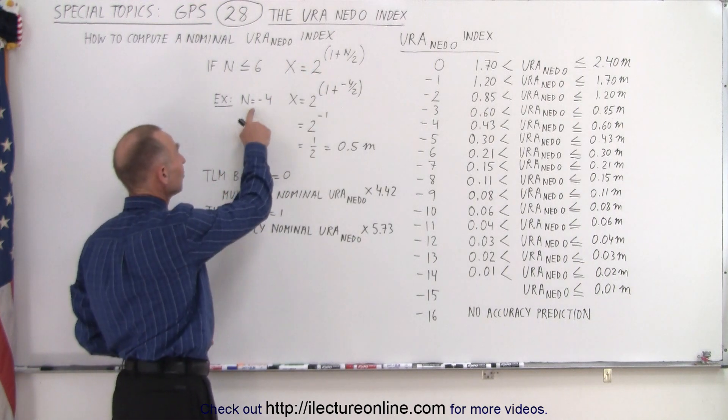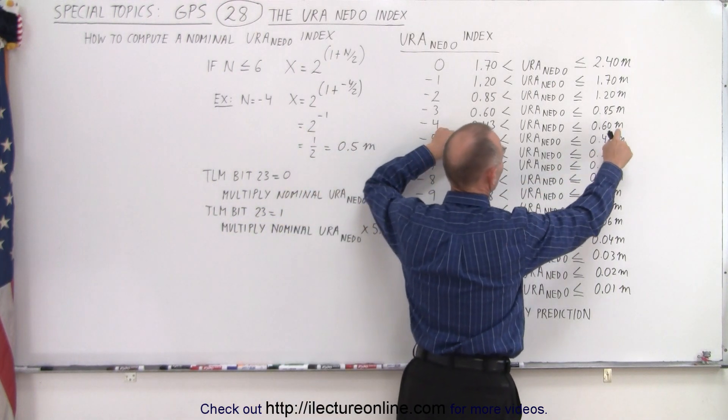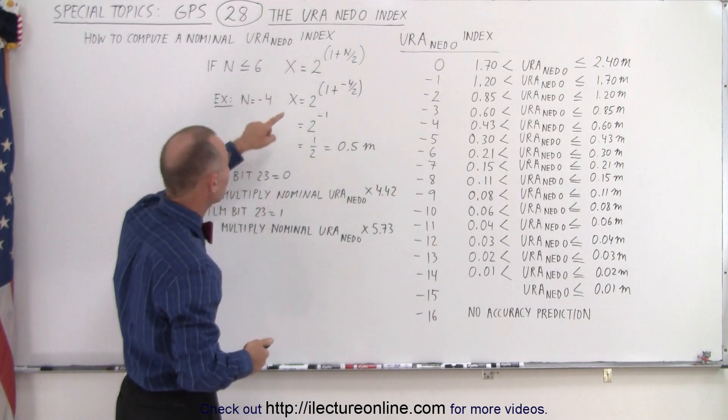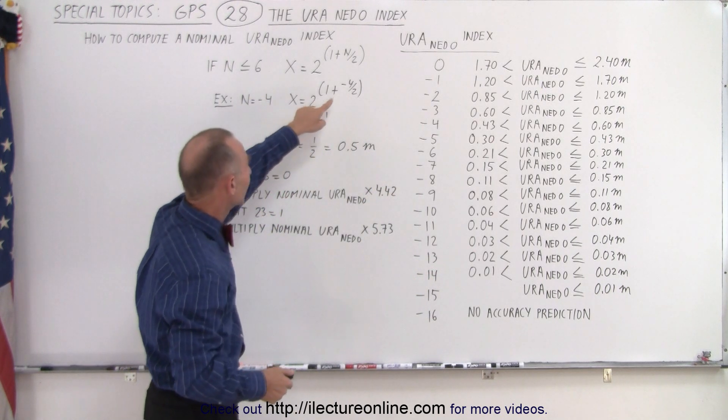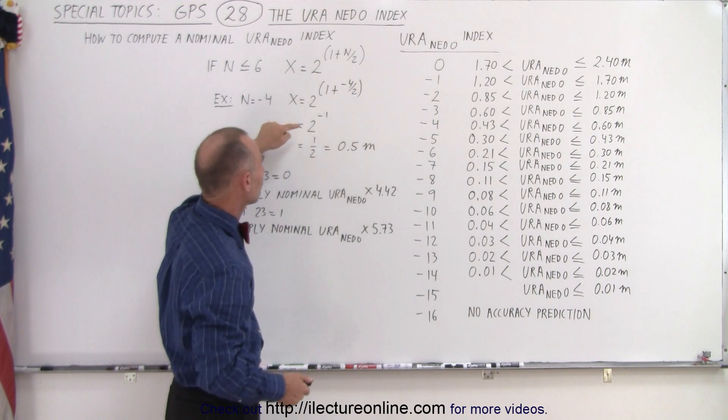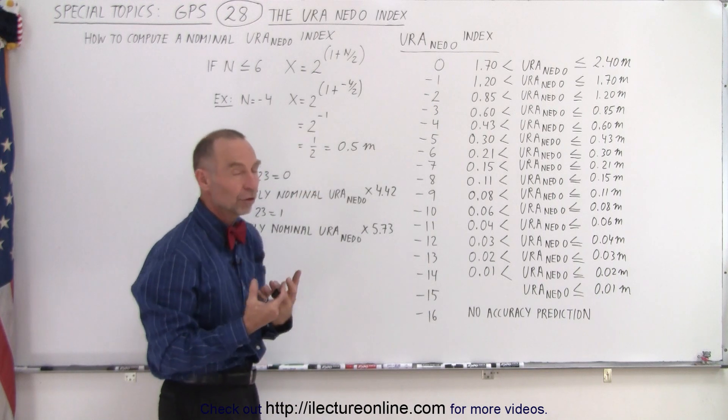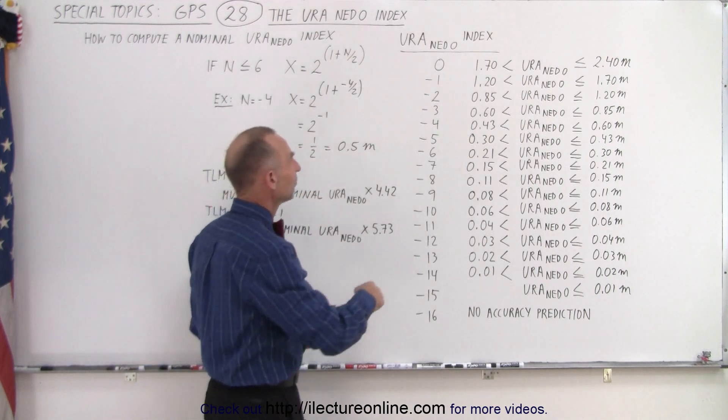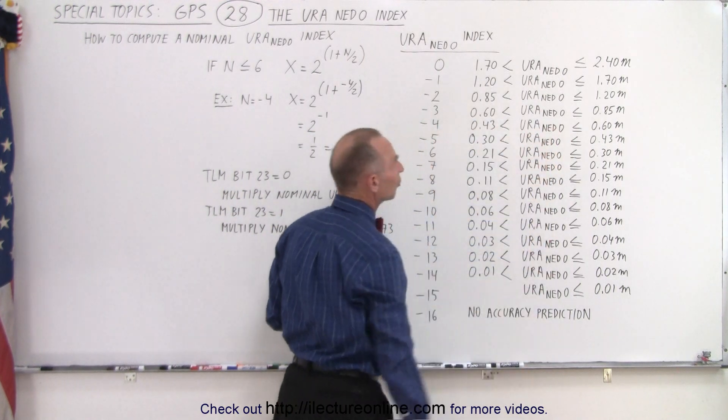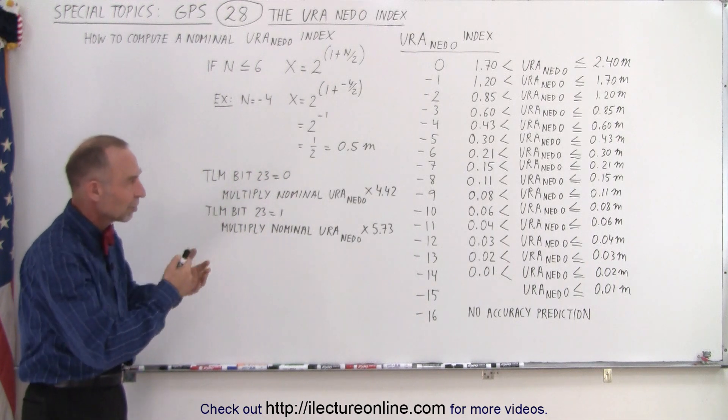As an example, if n is equal to negative 4, notice that the range should be between 0.43 and 0.6, but it's better just to pick a particular value and that's done by using this equation. Plug in a negative 4 for n. Negative 4 divided by 2 is negative 2, plus 1 gives you 2 to the minus 1, which is one half or 0.5 meters. So the nominal value used if the index is equal to negative 4 would be 0.5, which is pretty well between 0.43 and 0.6.